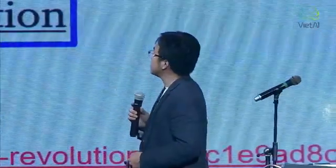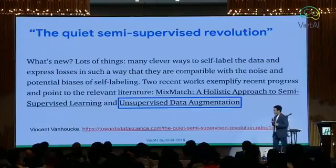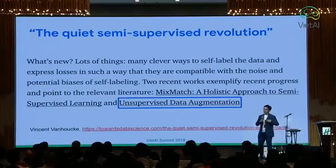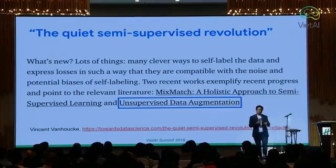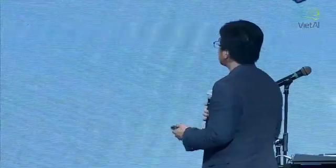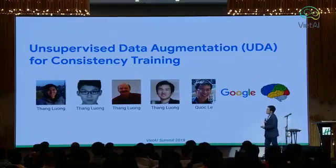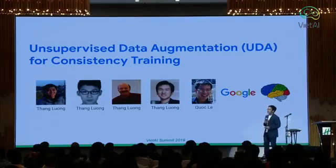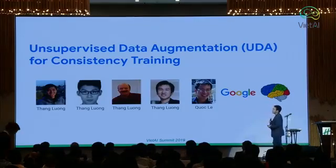They mentioned our work here — it's actually just this year. This is our work and also our colleagues' work. The idea is about utilizing lots of unlabeled data, but you add some noise, so the system is more robust to the noise added to the examples. This is work by me, Quoc, and other colleagues at Google Brain. The work is called Unsupervised Data Augmentation for Consistency Training.